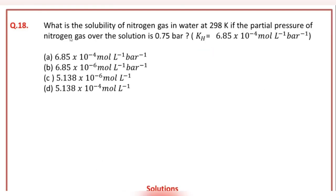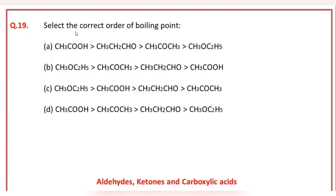What is the solubility of nitrogen gas in water at 298 Kelvin if the partial pressure of nitrogen gas over the solution is 0.75 bar? You are given Henry's law constant and its value is supplied to you.